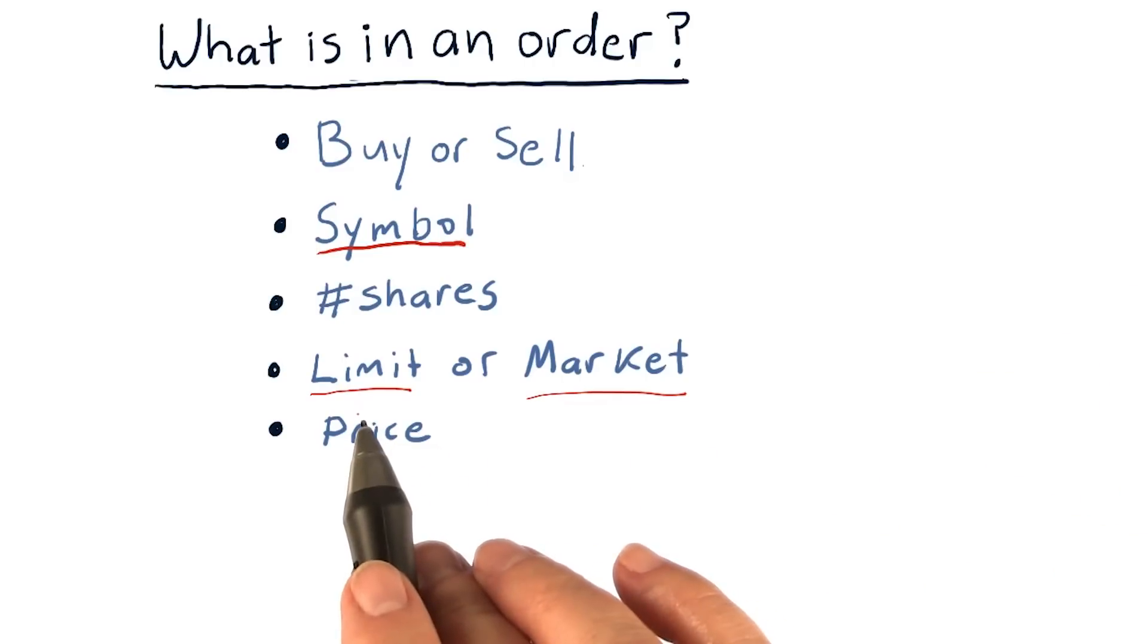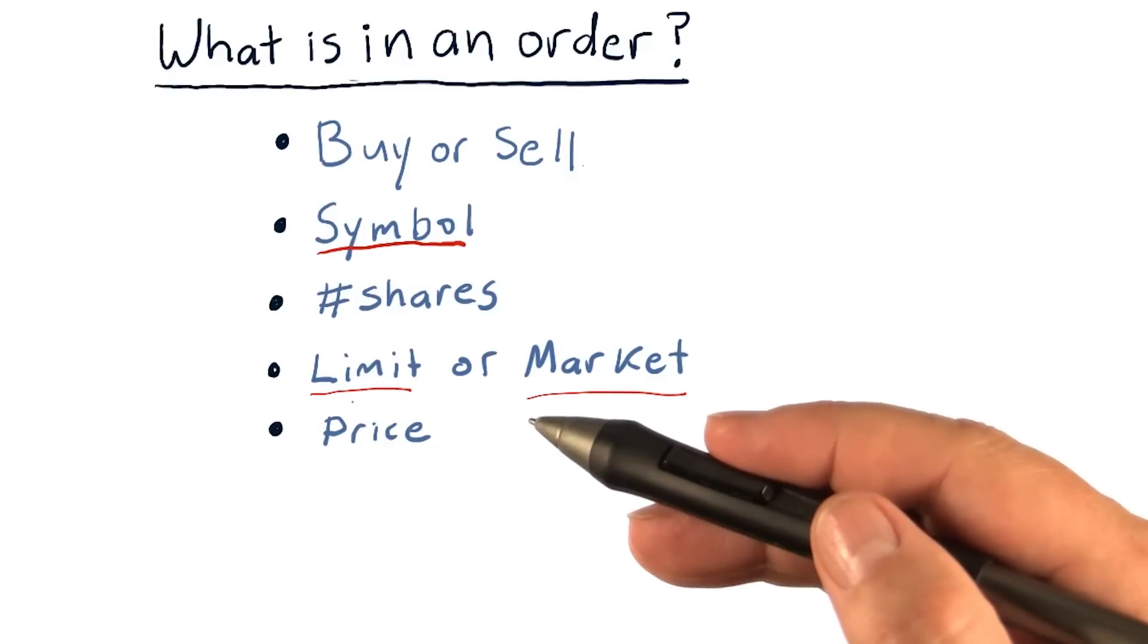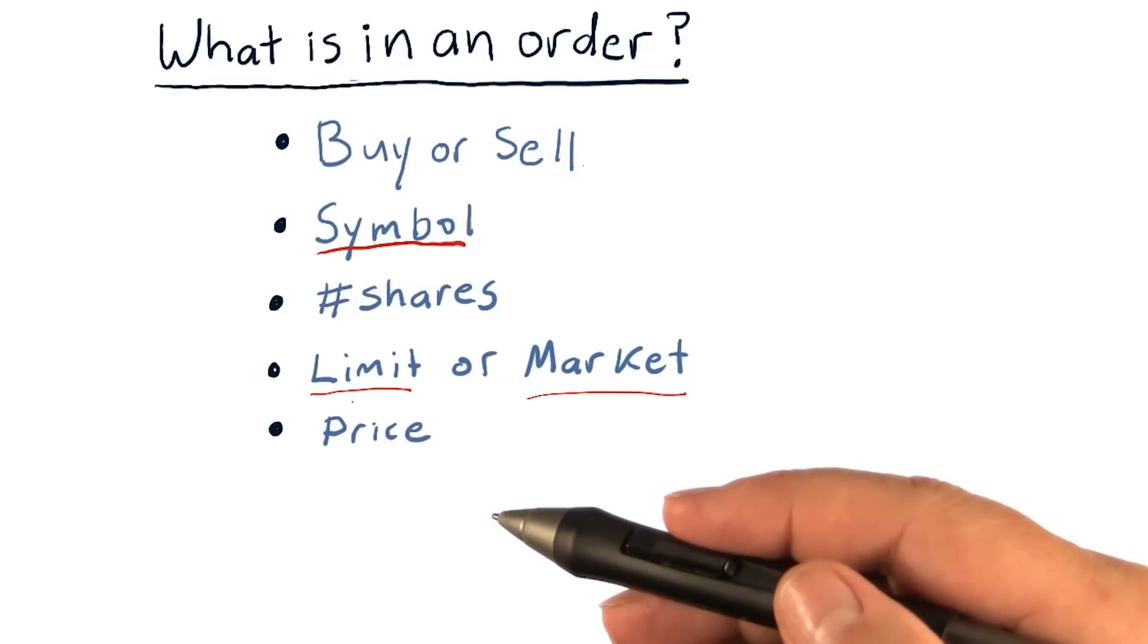A limit price means you don't want to do any worse than a certain price. For instance, suppose you're selling some stock. You might specify, I don't want it to be sold below a particular price.